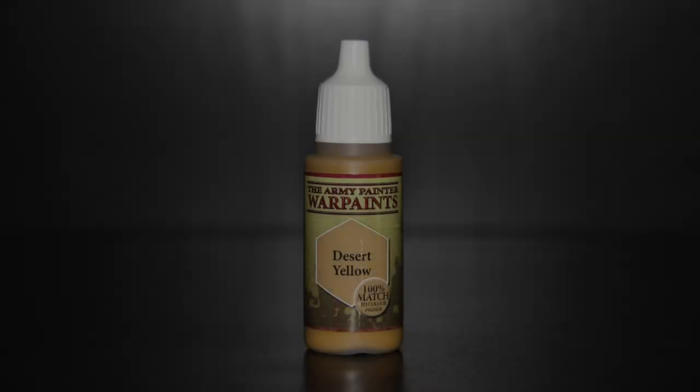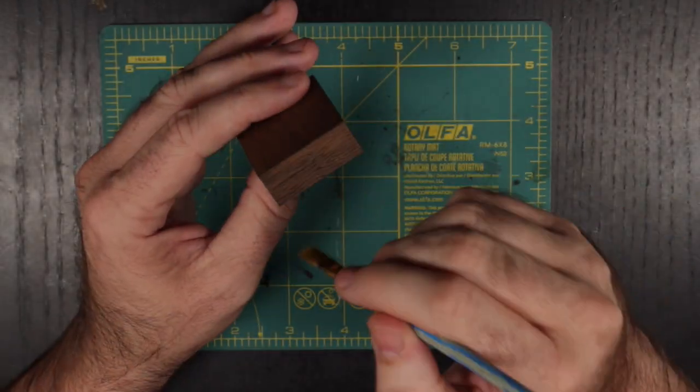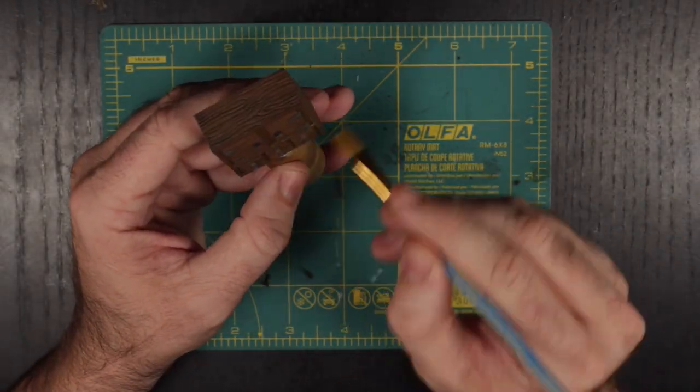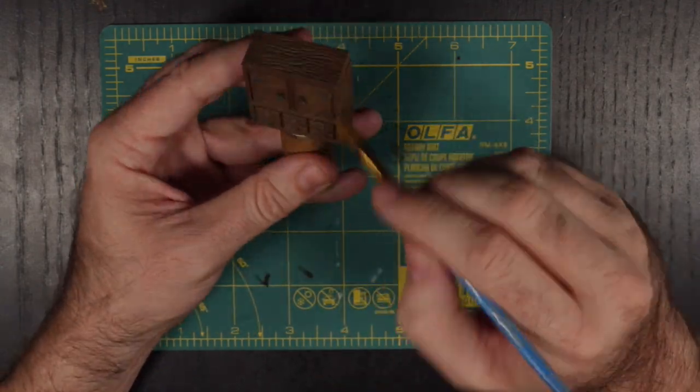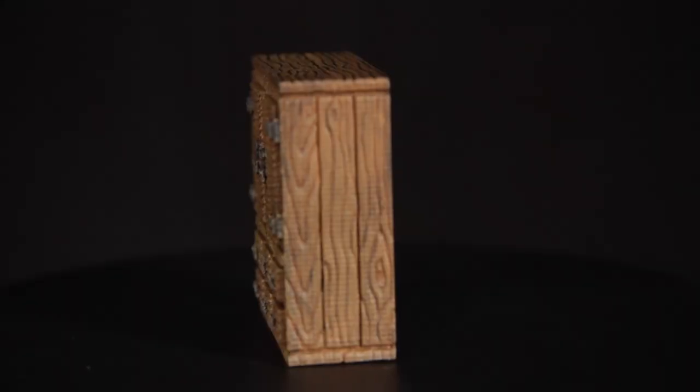Onto our highlighting, we will be using Army Painter's Desert Yellow to do a quick dry brush over the wooded area. And with that, our first of many shelves is ready for the table.